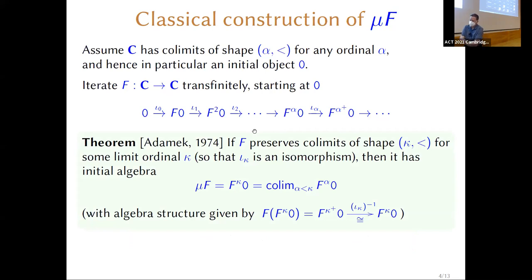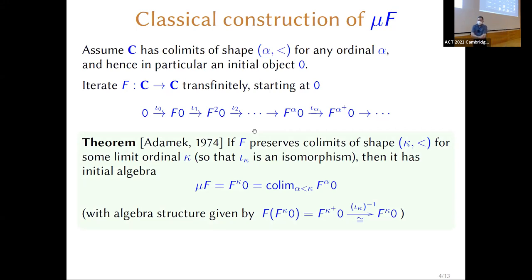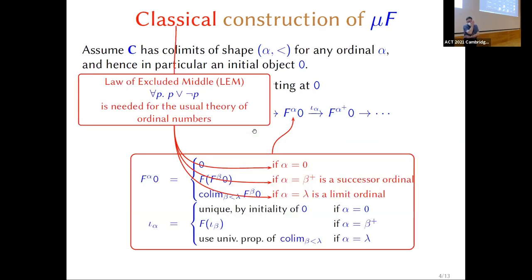The structure morphism will actually be the inverse of the transition morphism ι for that limit ordinal. This is a very old theorem — it's the categorification of one of the classical ways of constructing a fixed point in complete lattices by iterating monotone functions and taking large joins. This is a classical theorem for a number of reasons: the principal reason is that you use the law of excluded middle all over the place.